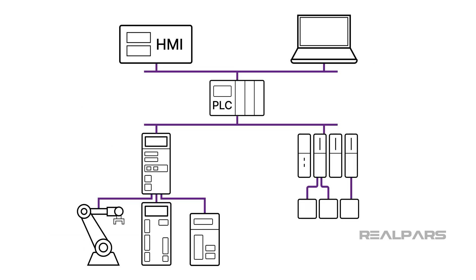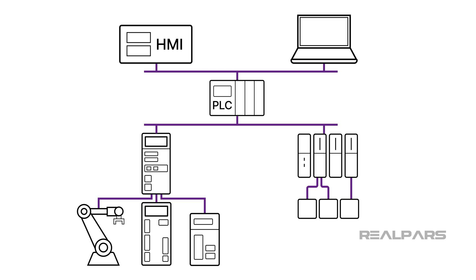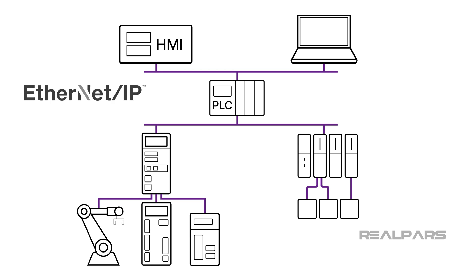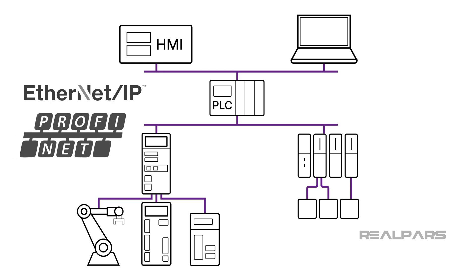Ethernet has been used in industrial plant settings for decades for communication between PCs, PLCs, and HMIs, as well as to various devices and servo drives on the plant floor using communication protocols such as EtherNet/IP and PROFINET.